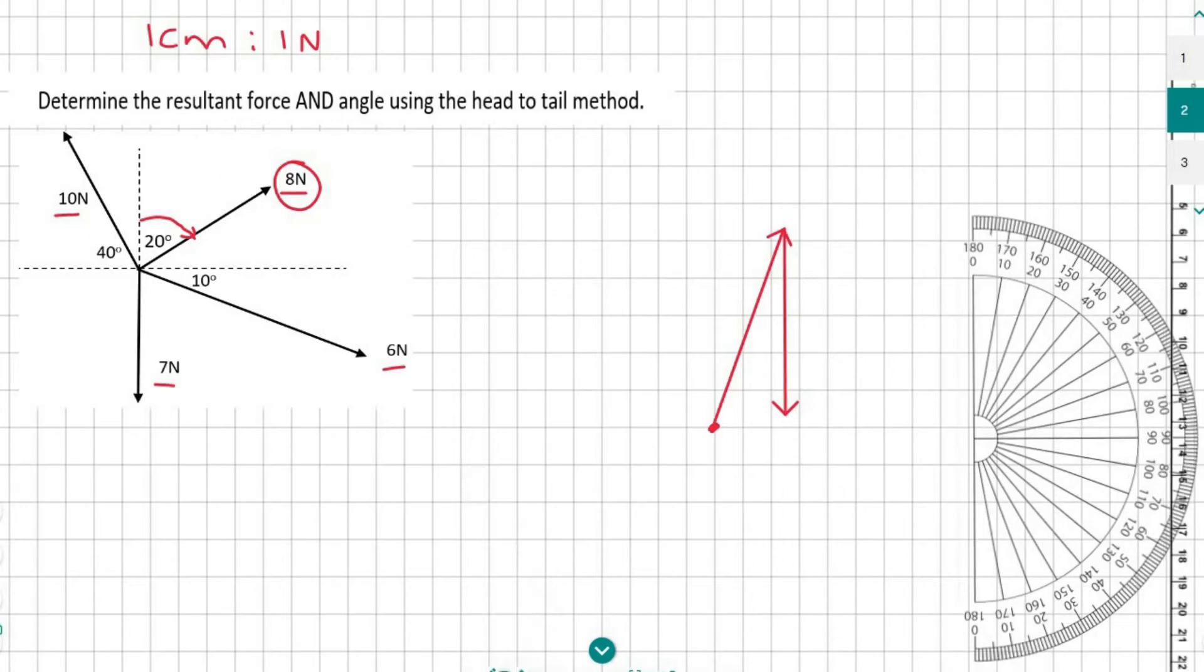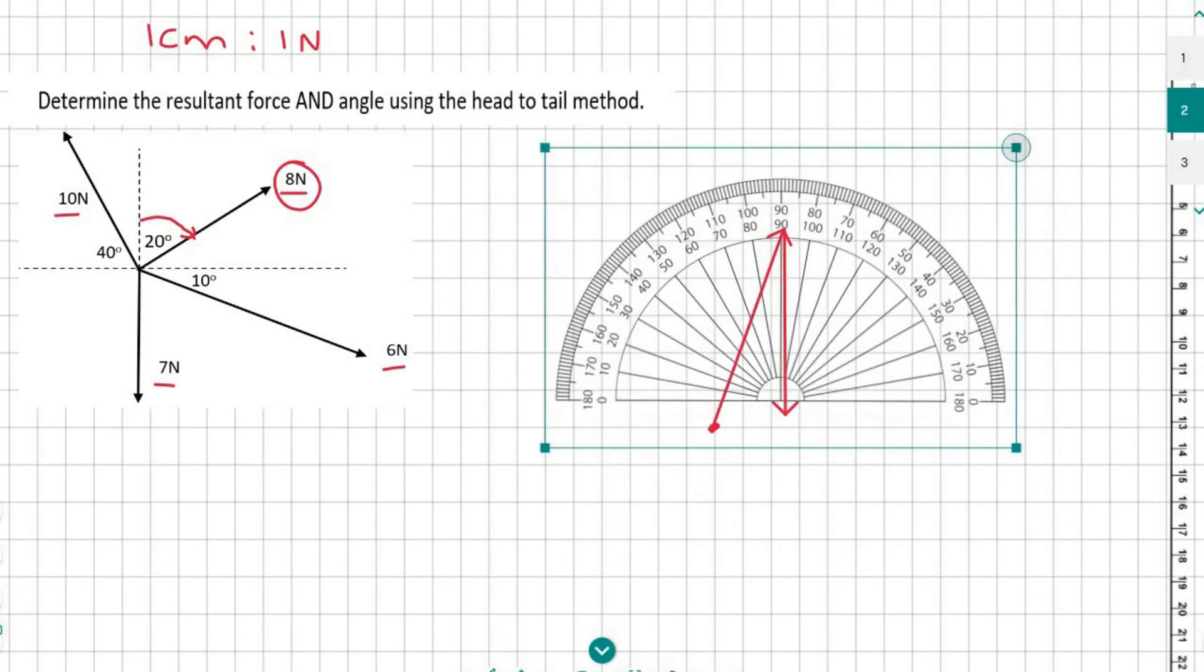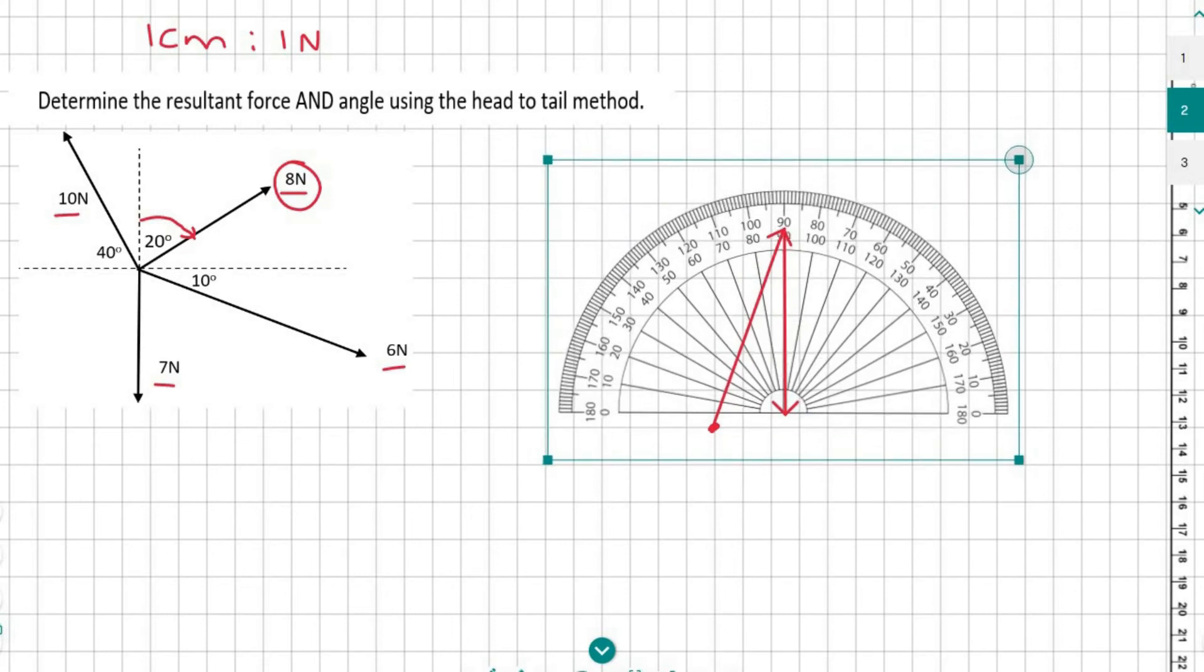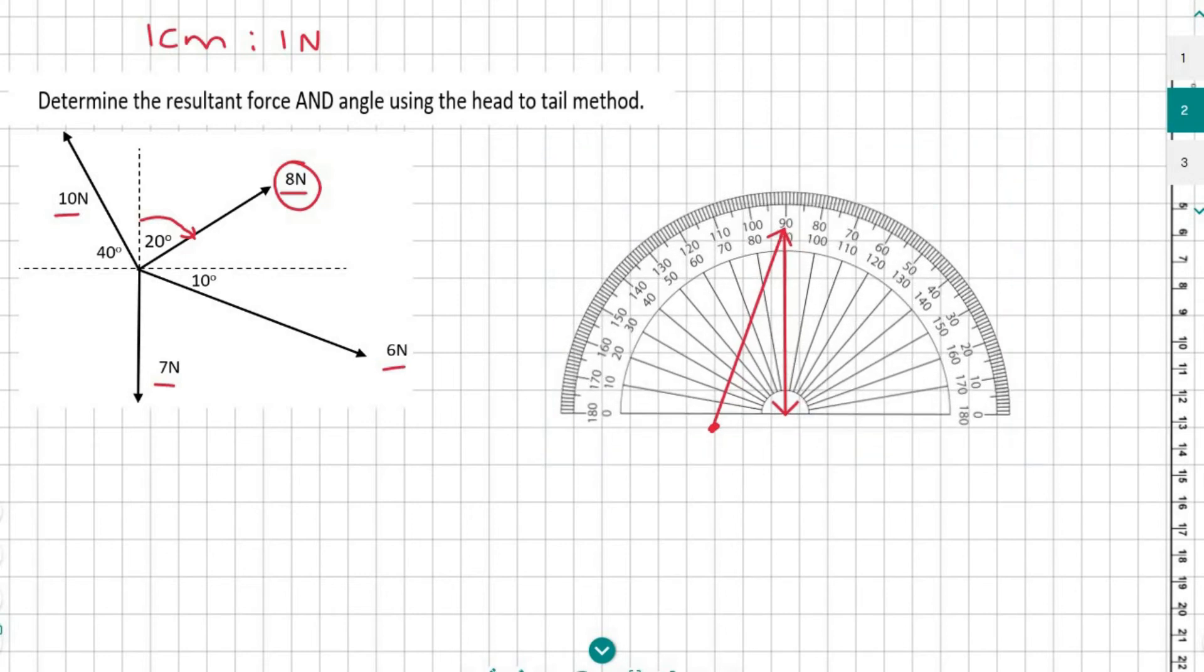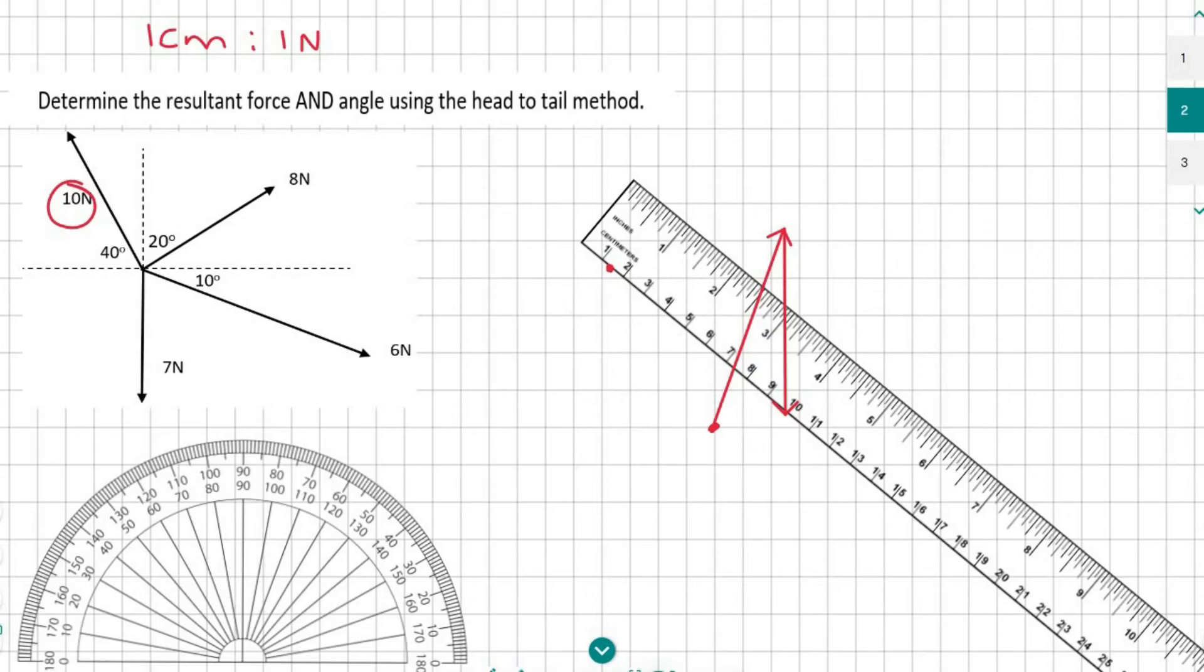The next force is the 10 newton. The 10 newton is going at 40 degrees. I put my protractor at the same place where I just finished with my last force. Look at how this 40 degrees is measured—it's measured relative to that horizontal. I'm going to measure it from here up to there, which is 40 degrees. There I've positioned my ruler, and now I can draw the 10 centimeter line like that.